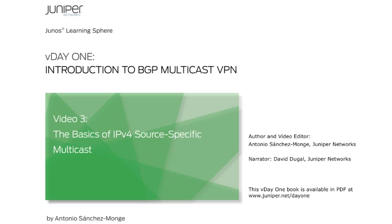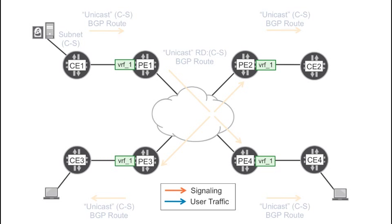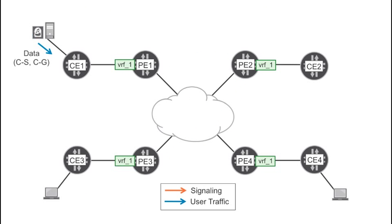This is Video 3, describing task number three of this introduction to multicast VPNs. Now that you have unicast connectivity to the source, you can start a multicast flow from the customer source Cs. The destination IP address of this flow is the customer group Cg. It's time to enable multicast protocols.